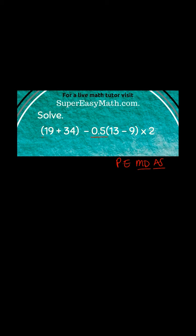So I can see that I have the 19 plus the 34 and what I'm going to do there is write down 53 minus 0.5, and here I'm going to go ahead and solve the 13 minus 9 and get 4 and multiply that by 2.